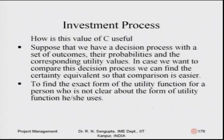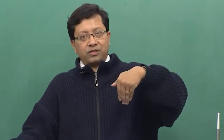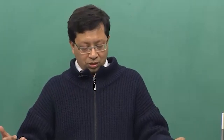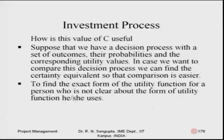The value of C is useful when you want to compare a decision process with a set of outcomes, their probabilities, and corresponding utility values. Instead of going through detailed calculations each time, once you have C you can immediately rank which decision is better. The certainty equivalent is also useful for finding the exact form of the utility function, which I will explain with a thought-out experiment from the point of view of investment in a project.